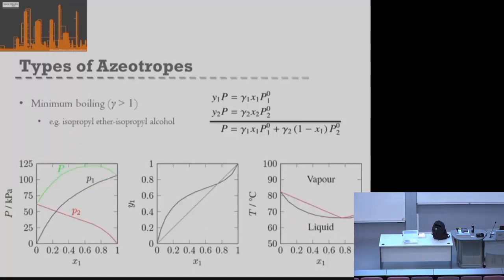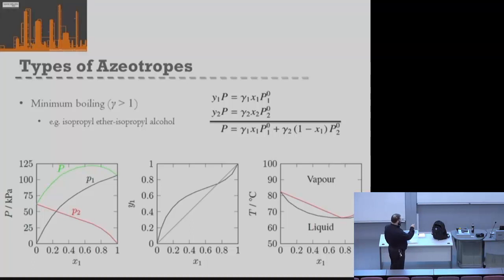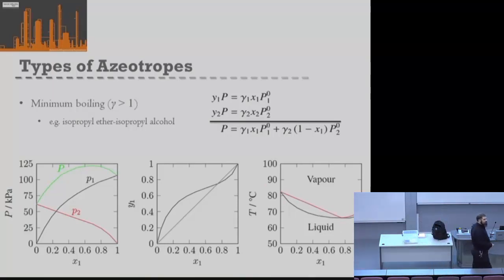The next type is a minimum boiling azeotrope — the converse argument. In this case our activity coefficient is greater than 1, meaning when we mix our two components together, they prefer to be separate than mixed. That means we don't need to go to a higher temperature to boil them — we can boil at a lower temperature. So the boiling point of that azeotrope is lower than either of our two pure components.